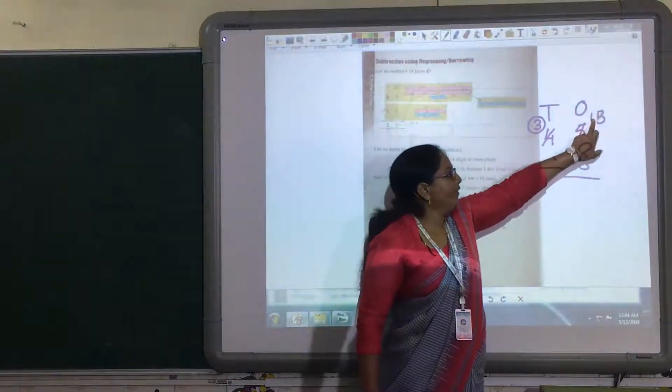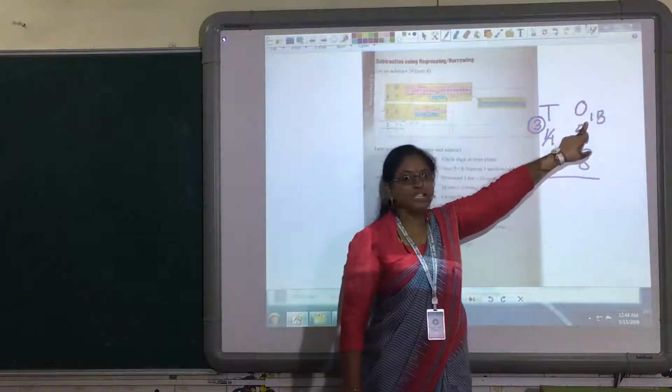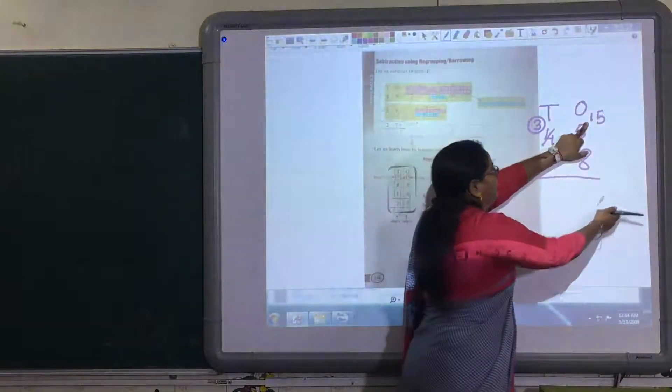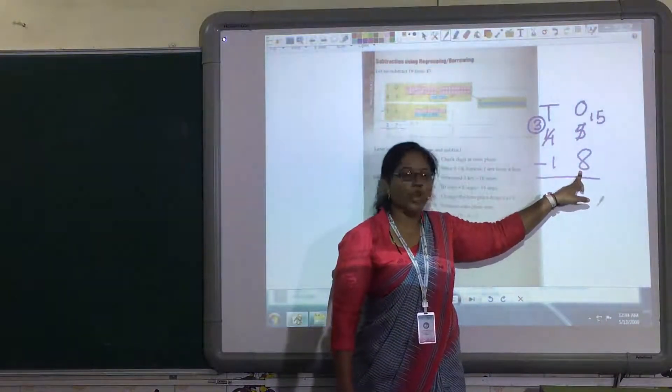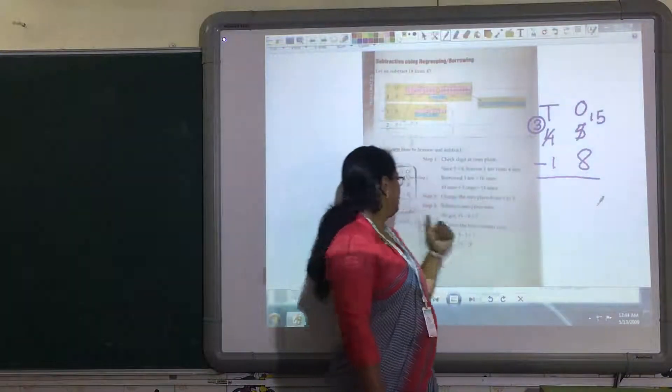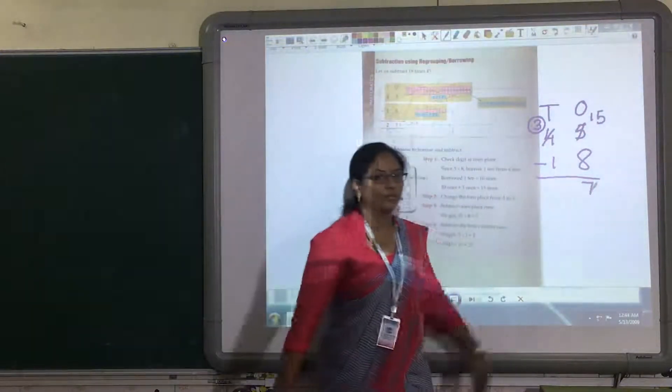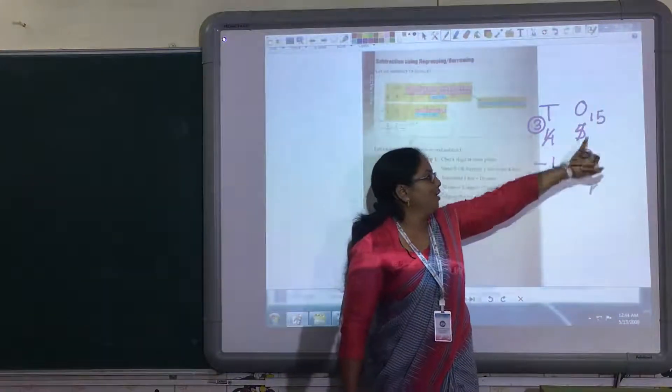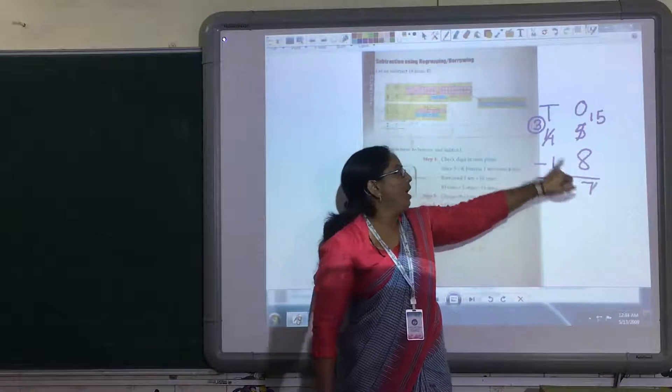Now, from 15, if we minus 8. 15 is the bigger number here. From bigger number, you can minus smaller number. So, 15 minus 8, you will get the answer 7. When we minus 8 from this 15, you will get the answer 7.